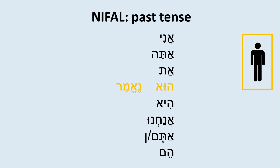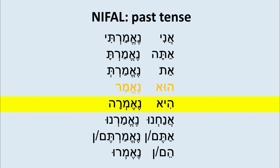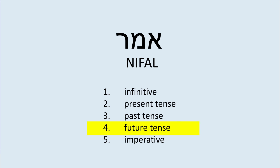From here we take it to our table: ne-emar. We fill it up and read together: Ani ne-emarти, Ata ne-emarta, At ne-emarte, Hu ne-emar, Hi ne-emra, Anachnu ne-emarnu. That was quick and easy.